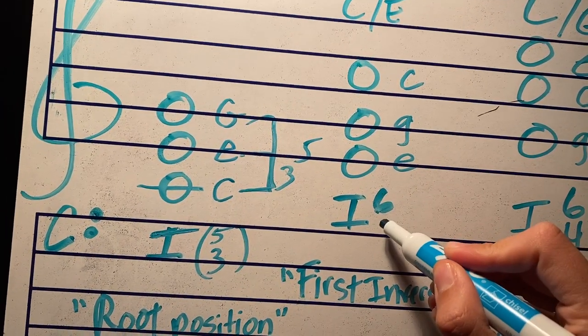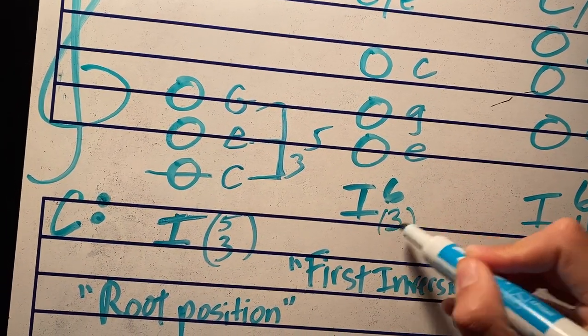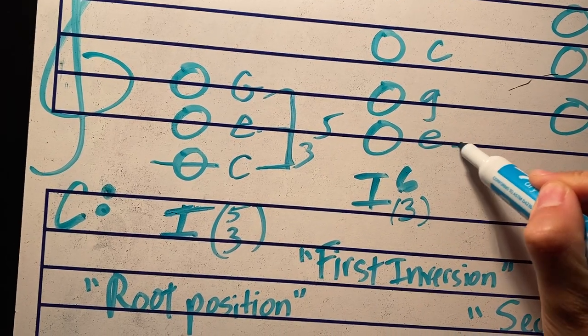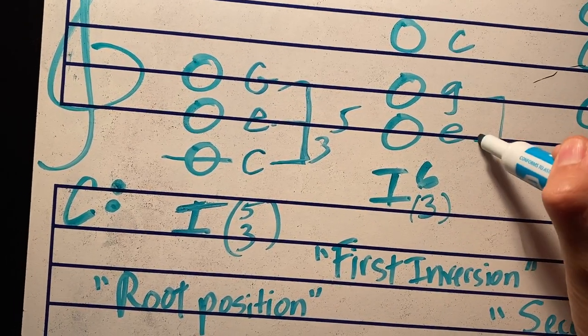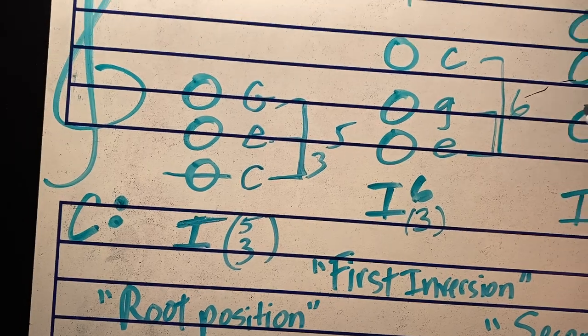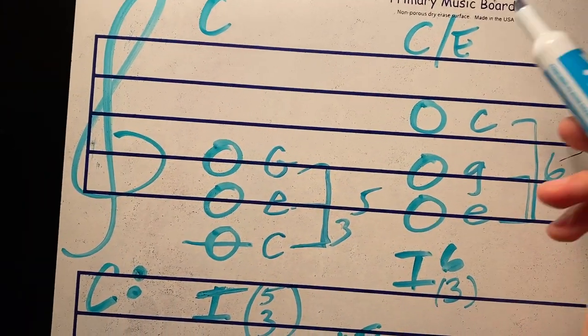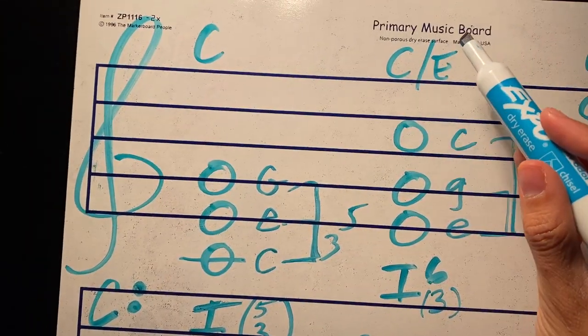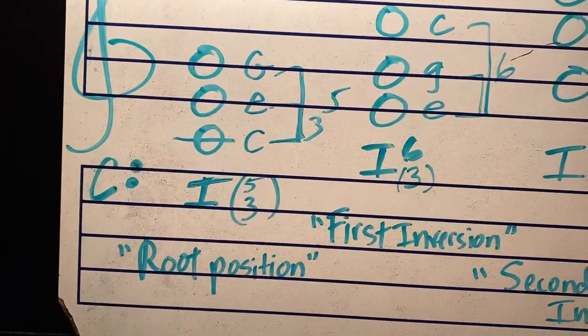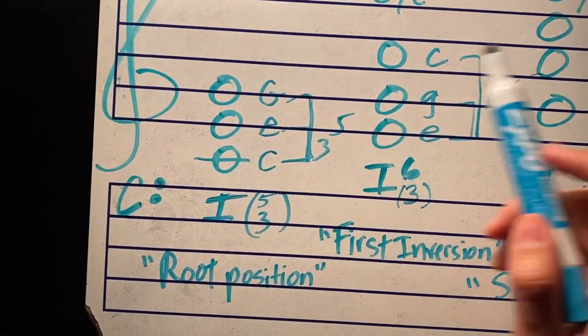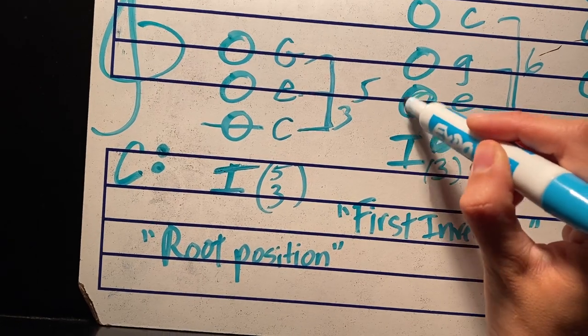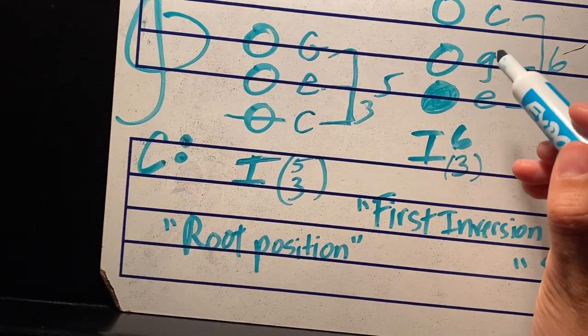What you don't see is the third down here. This is kind of implied. So the distance from E to G is a third. The distance from E to C is a sixth. And on lead sheets, you'll see it as a C chord slash with an E in the bass. It's called first inversion. Basically, it just means E is on the bottom, or the third of the scale is on the bottom.